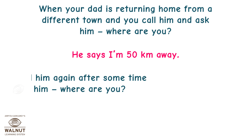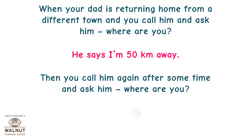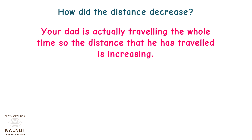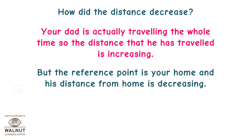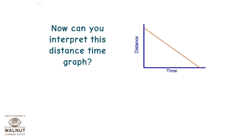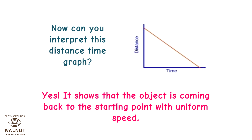He says, I am 50 kilometers away. Then you call him again after some time and ask, where are you? He says, I am 20 kilometers away. How did the distance decrease? Your dad is actually traveling the whole time, so the distance he has traveled is increasing. But the reference point is your home, and his distance from home is decreasing. So the object is coming back to the starting point. This graph shows that the object is coming back to the starting point with uniform speed.